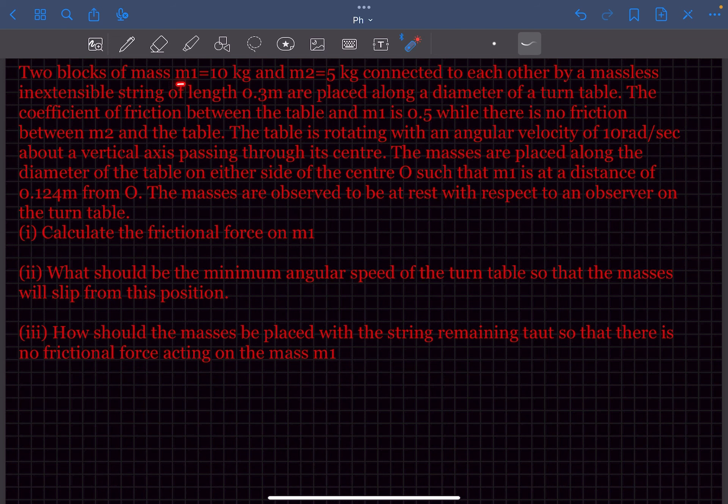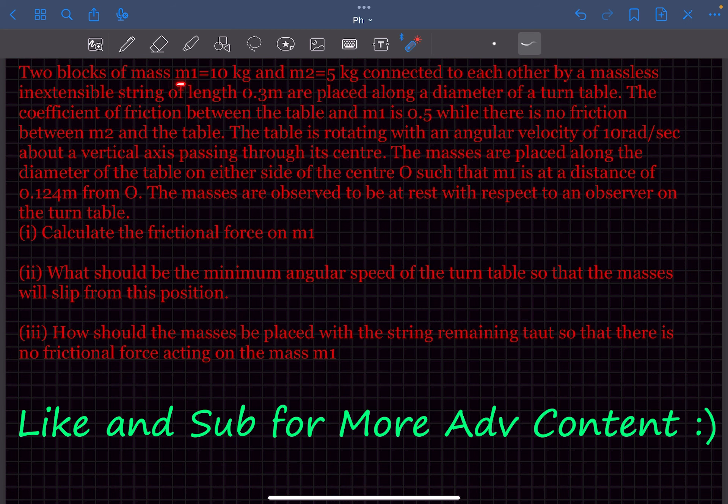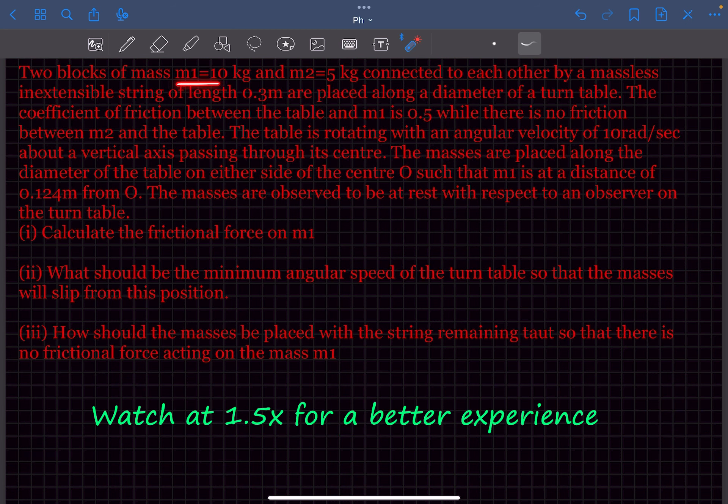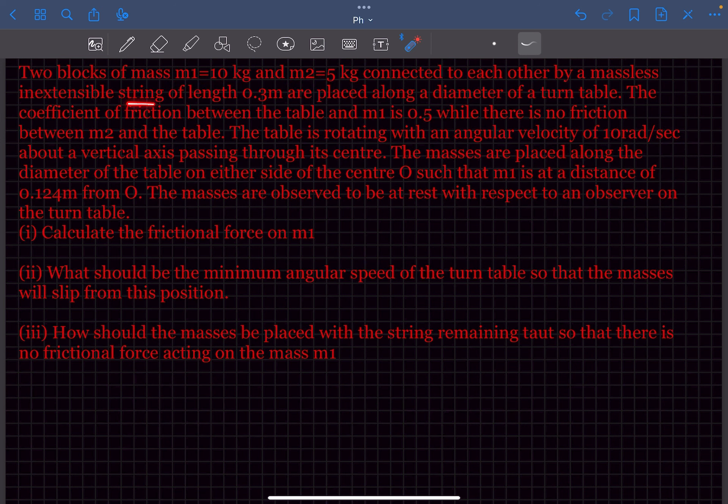Welcome back everyone and in this video we'll solve this amazing previous year question based on the concepts of friction. So let's read the problem statement. The problem statement is that we have two blocks of mass m1 and m2 that are connected to each other by a massless inextensible string of length 0.3 meters and they're placed along a diameter of a turntable.